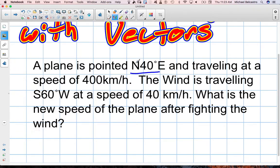A plane is pointed north 40 degrees east and traveling at a speed of 400 kilometers an hour. The wind is traveling south 60 degrees west at a speed of 40 kilometers an hour. What is the new speed of the plane after fighting the wind? It's also known as what is the magnitude of the resultant vector between these two. Let's gather our values to help draw our diagram. North 40 degrees east at 400 kilometers, the magnitude and the direction. Here's our direction again and our other magnitude for our vectors.